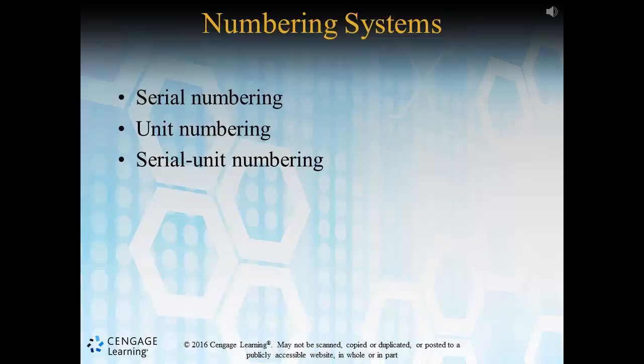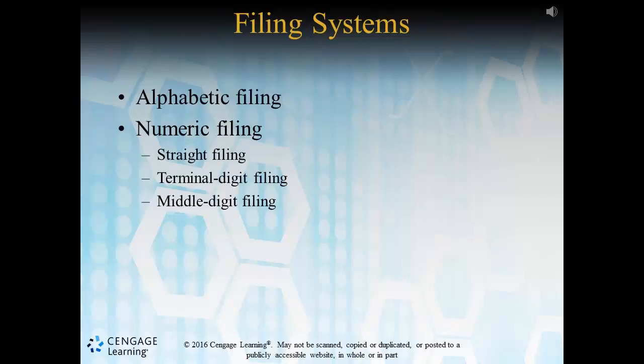Now that we've covered the actual numbering systems, let's review the systematic approaches to filing these records. There are really only two main filing systems: alphabetic and numeric. Of all the concepts outlined in this course, these are probably the most straightforward at their core.